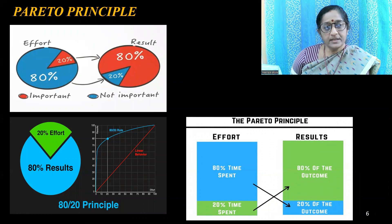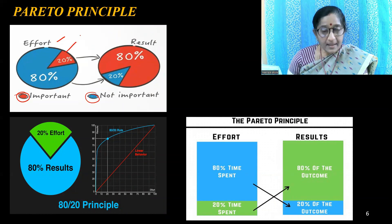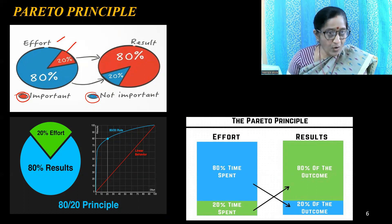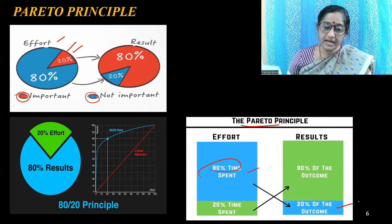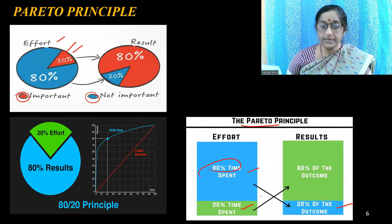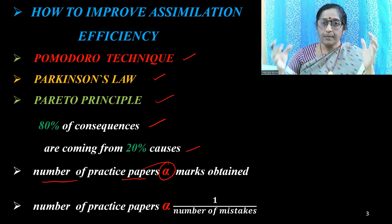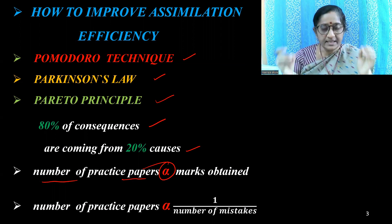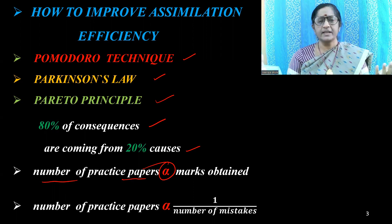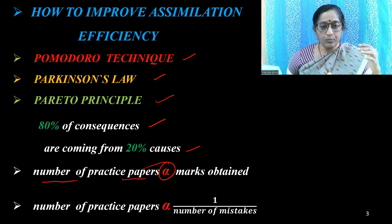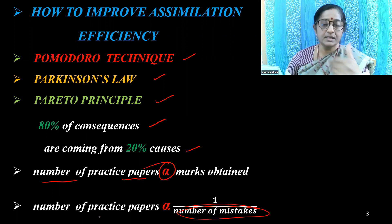The next principle is the Pareto Principle: 80% of consequences are due to 20% of causes. If 80% of time is spent, the result will be only 20% efficiency. But within 20% available time, results will be 80%. The marks you obtain are directly proportional to the number of practice papers, and more practice papers means mistakes will be inversely proportional.